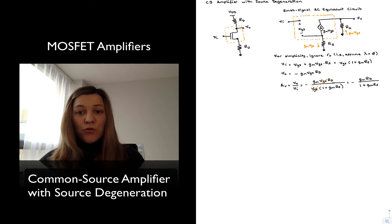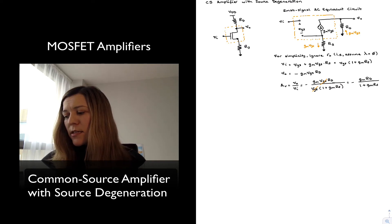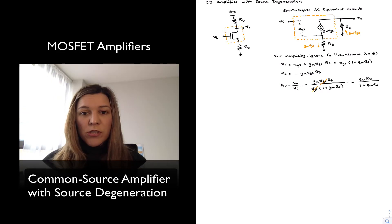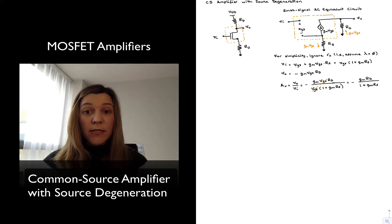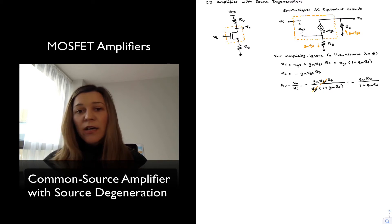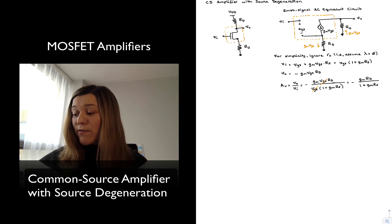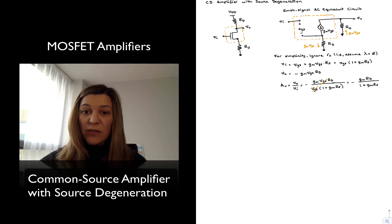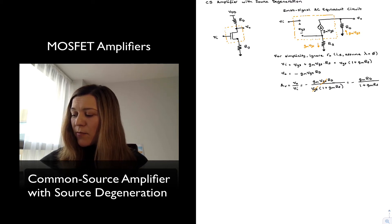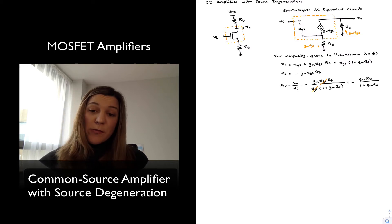Something important to notice about this expression is that it's the exact same gain as I had before without my source degeneration resistor. It was minus GM times RD in that case, and in this case it is divided by the factor 1 plus GM RS, which we may now be able to identify as the feedback factor. And in fact, RS provides negative feedback to the circuit. The effect is that it is decreasing the overall gain of the circuit by the feedback factor, 1 plus the loop gain. And we should expect that it's going to increase the bandwidth of the circuit.